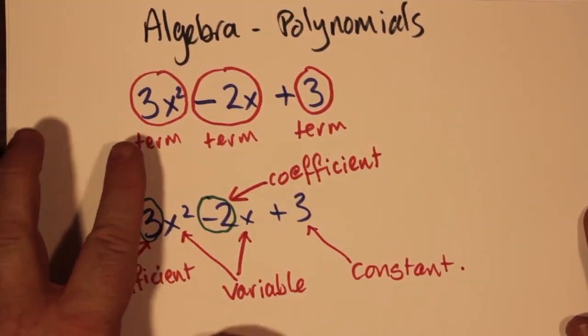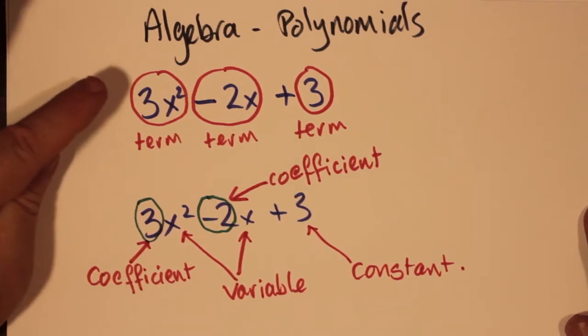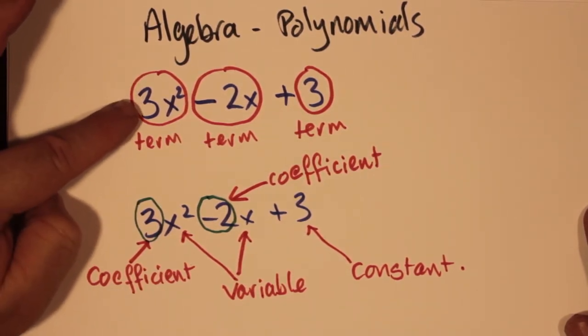Today we're going to talk about the algebra of polynomials, at least the entry-level things you need to know. First of all, let's take a polynomial such as 3x² - 2x + 3. Each of the entities, 3x² for example, is called a term.